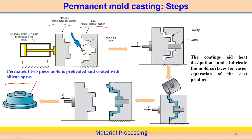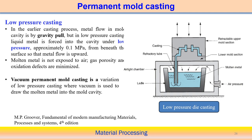A variant of permanent mold casting is the low pressure casting process. Unlike gravity die casting where liquid metal flows by gravitational force, in low pressure casting the liquid metal is pulled upward against gravity by creating a vacuum or low pressure zone. Approximately 0.1 MPa pressure is applied from beneath, causing the metal to flow upward through a channel to fill the mold cavity.